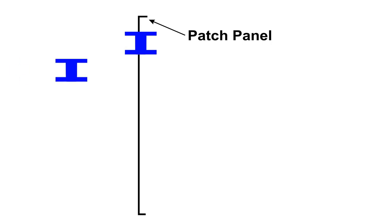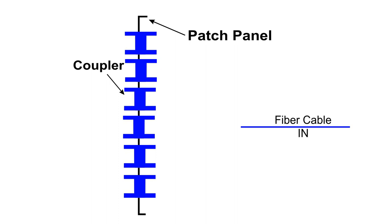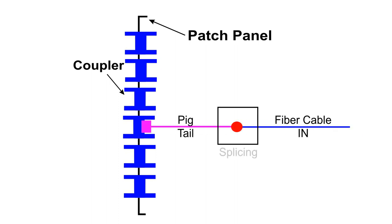Let's see how we make connections inside the LIU. Here we have a 6-port LIU which is loaded, meaning adapters are pre-mounted on the patch panel. As you can see on the screen, the incoming fiber is spliced to the bare end of the pigtail. The other end of the pigtail with connector is inserted into the coupler or adapter mounted on the patch panel. At the rear end of the coupler, we attach a fiber patch cord which will be used to make connections to the switch via the media converter.